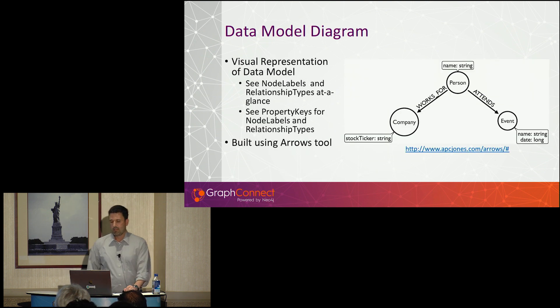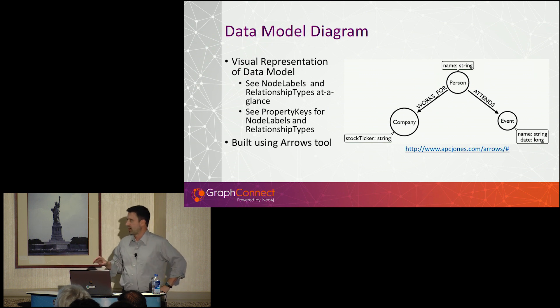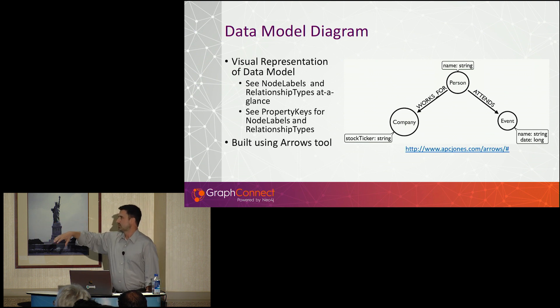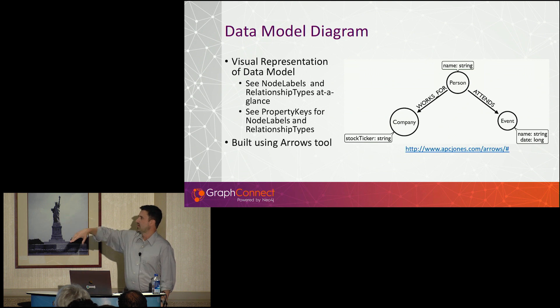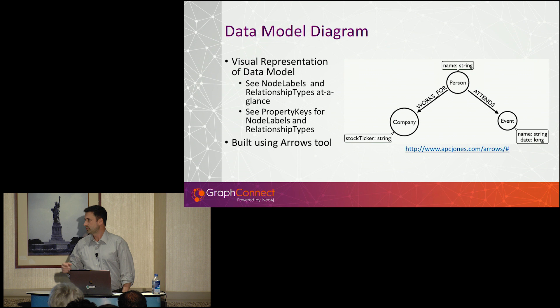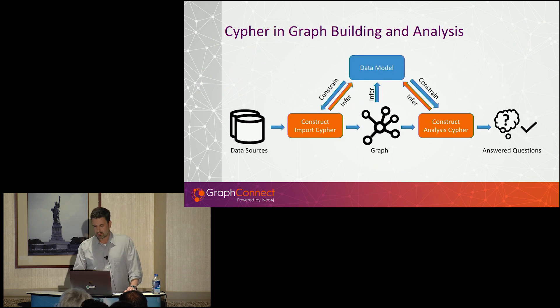And here is a visual model of that same simple data model. This is done in arrows. You see, just at a glance, person attends event, person works for company. You can see the property keys that are appropriate to those nodes. So it just gives you a quick, at a glance understanding of the model.